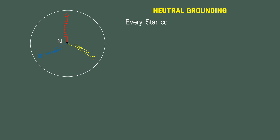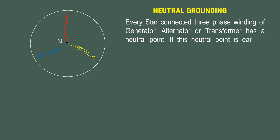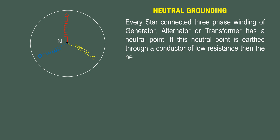Every star-connected three-phase winding of a generator, alternator, or transformer has a neutral point. If this neutral point is earthed through a conductor of low resistance, then the neutral is called solidly grounded.